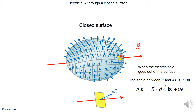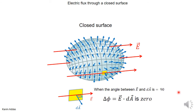Now look at an element of area where the electric field line is going out of the surface, like this element highlighted in yellow. Let's zoom in and see what's happening. The direction of the area vector is pointing outward — from inside to outside — and that means the angle between the electric field and area vector is less than 90 degrees. When that's the case, the dot product, the electric flux E dot dA, for this element of area is positive.